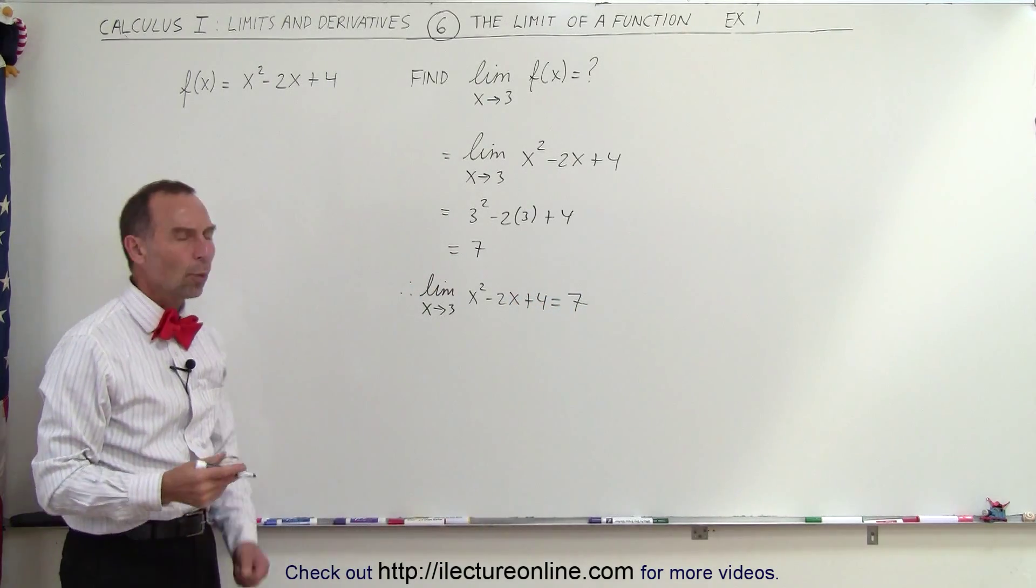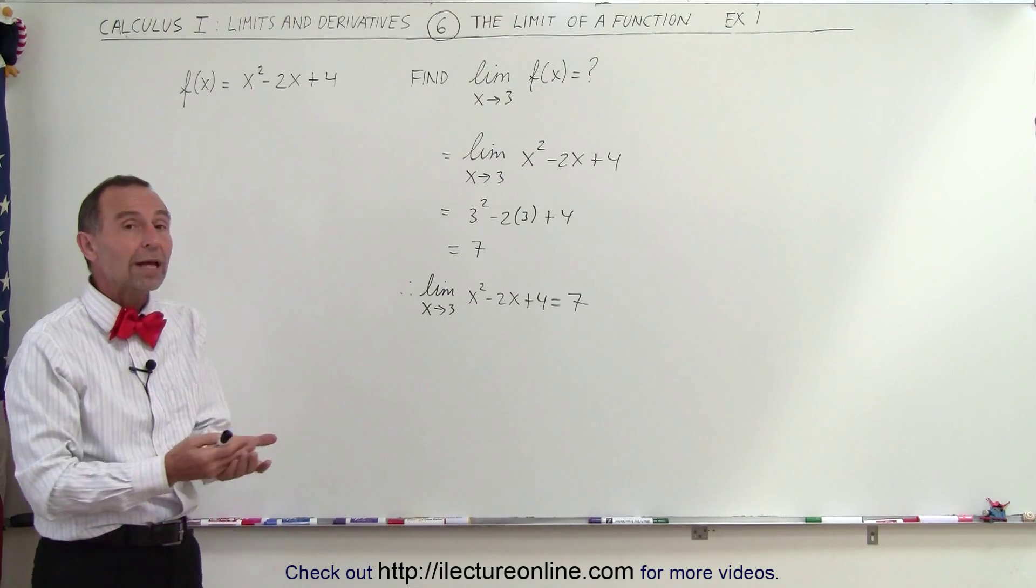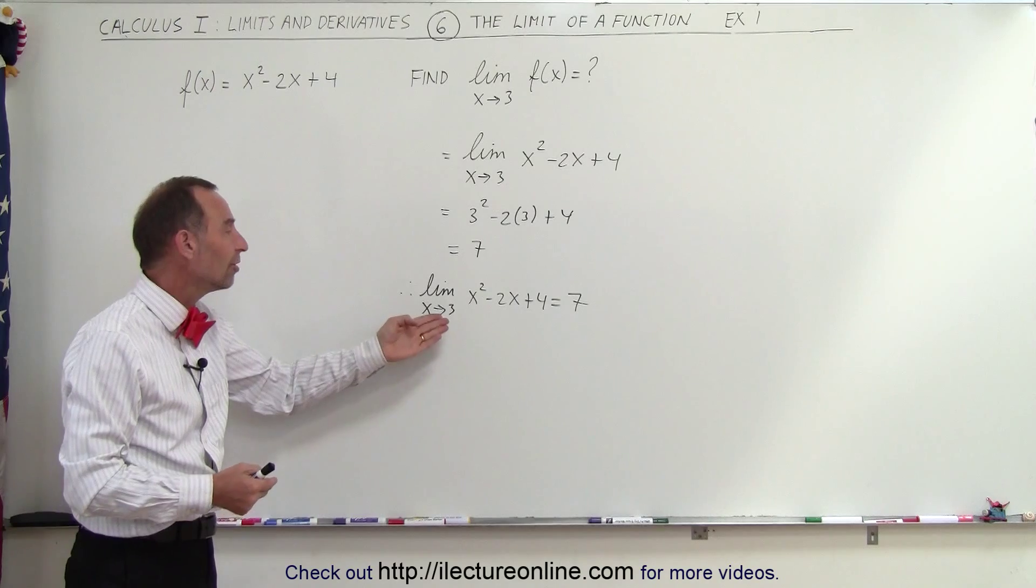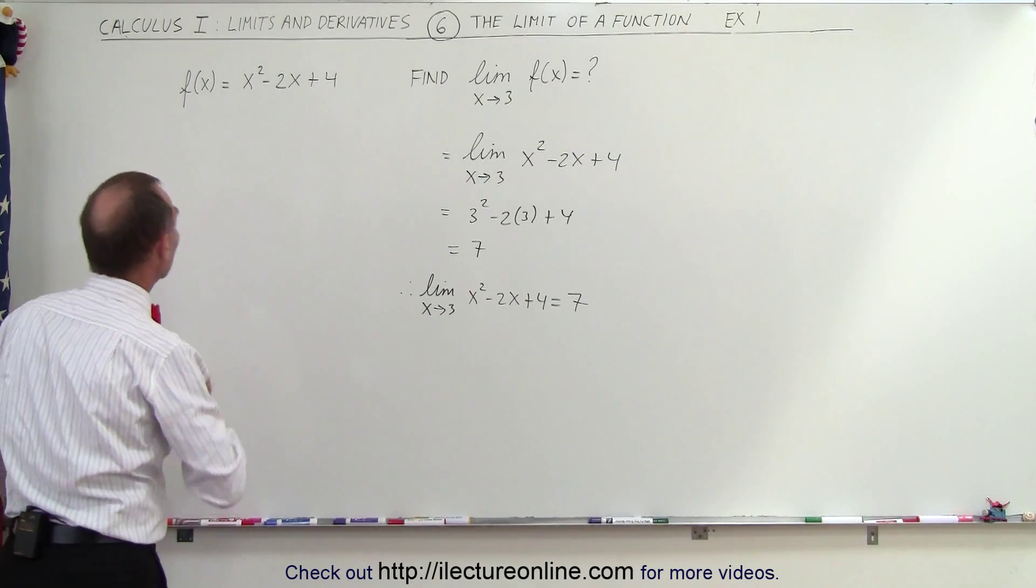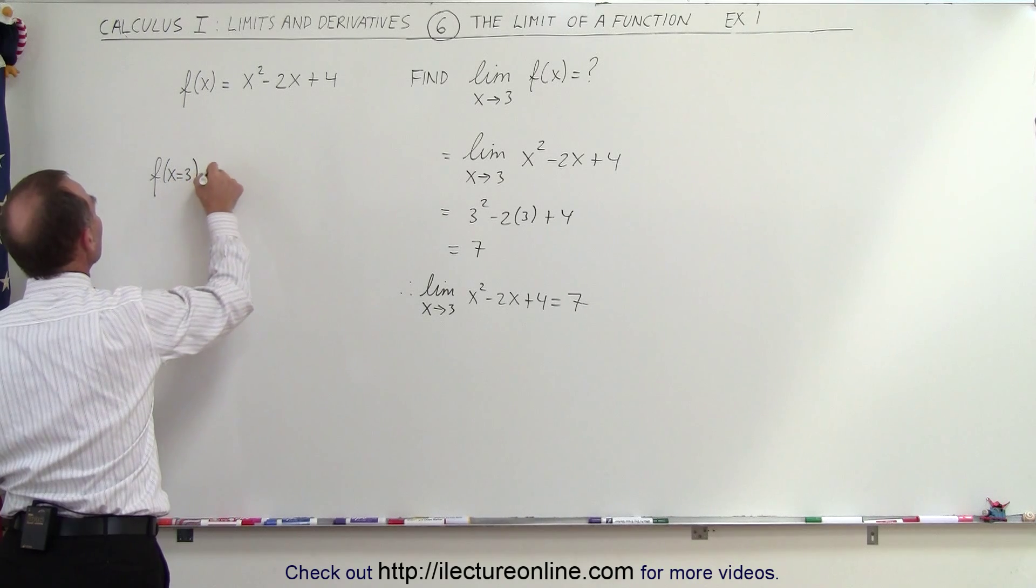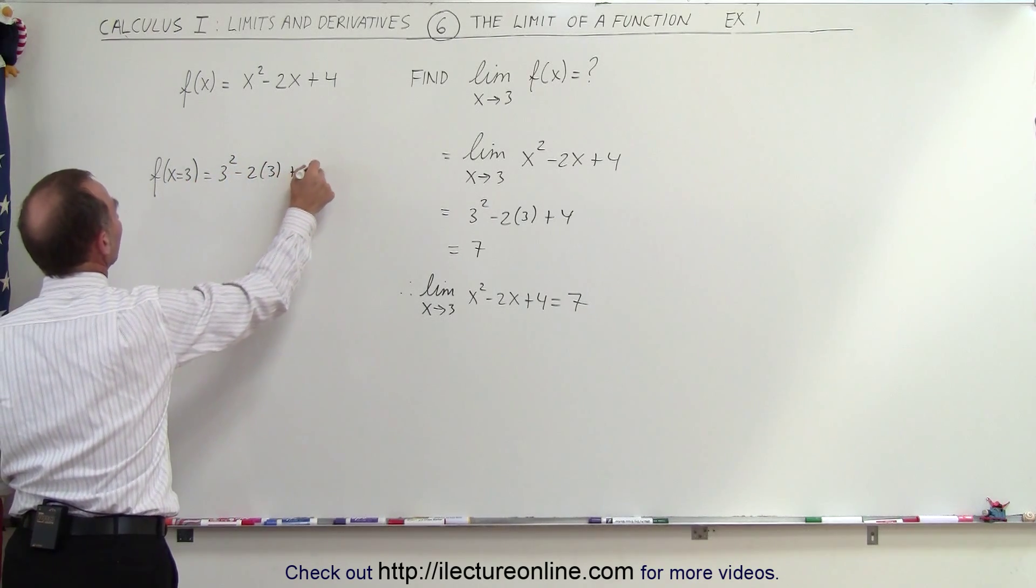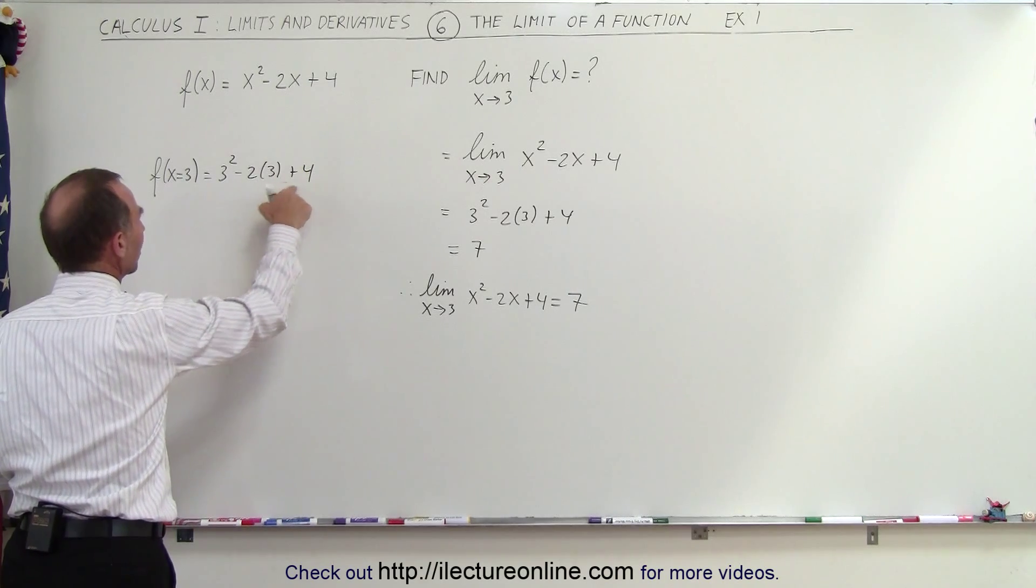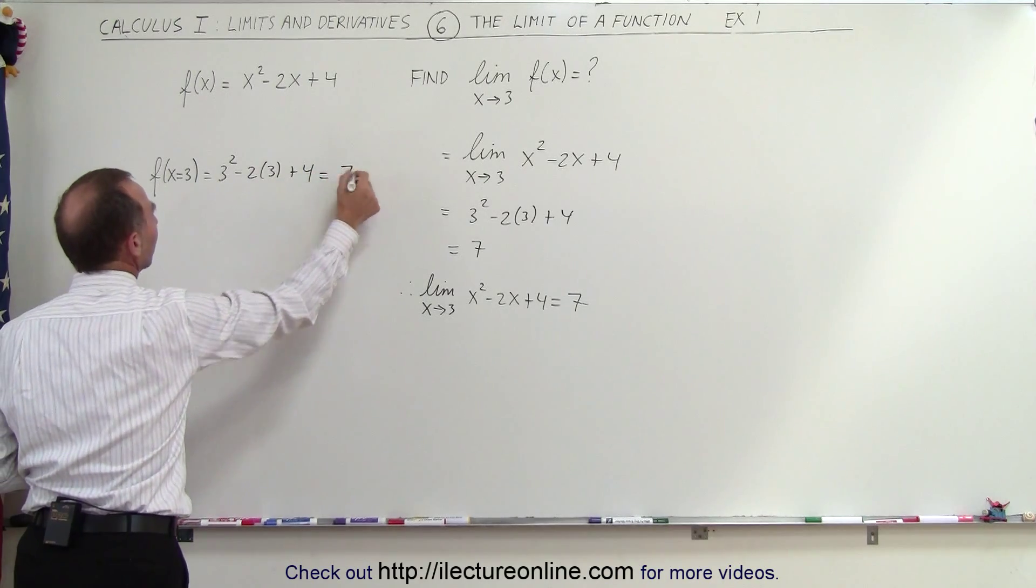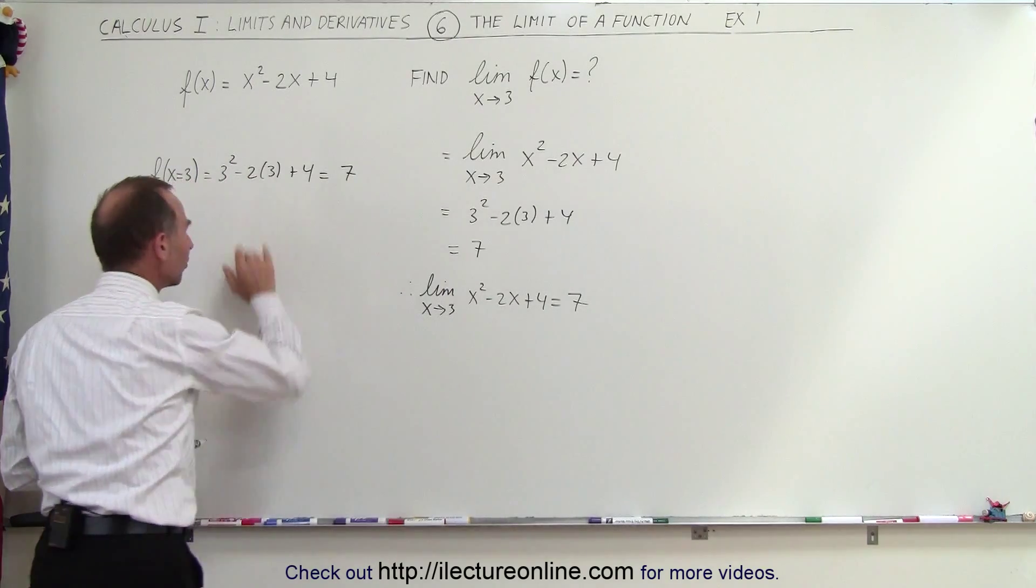But now you say, well, wait a minute, why do I have to go through all this trouble? Why can I just not evaluate the function? How is this different from this? What if I write simply this? f when x is equal to 3 is equal to 3² - 2(3) + 4, which is 9 - 6, which is 3 + 4, which is equal to 7. I get the exact same result. So how is this different from this?